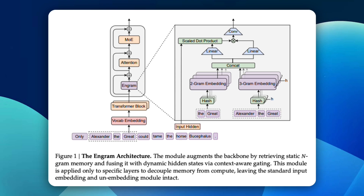Here's where it gets impressive. Ngram allows O(1) lookup into massive memory tables — even billion-parameter ones — stored in CPU RAM, not GPU VRAM. That means almost zero extra GPU cost, huge knowledge capacity, faster inference, and cheaper deployment. It's like giving the model an external hard drive and finally letting the GPU do what it does best: think.